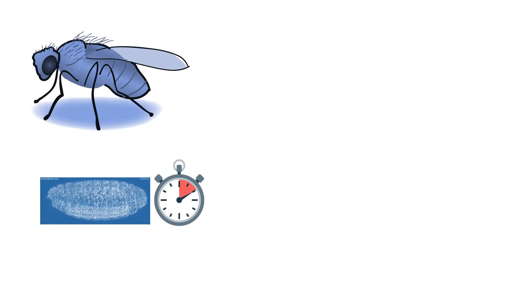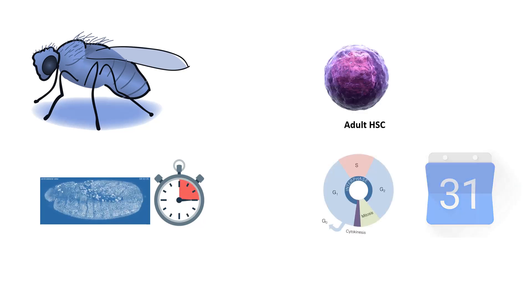For example, a drosophila embryo divides within 8 minutes. In contrast, a human stem cell which gives rise to blood requires about 31 days to divide.